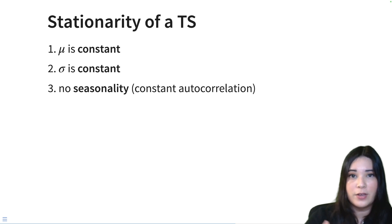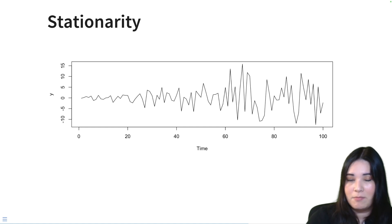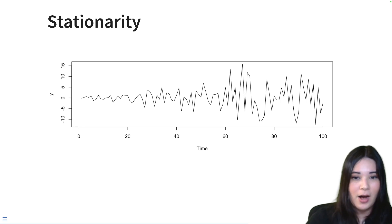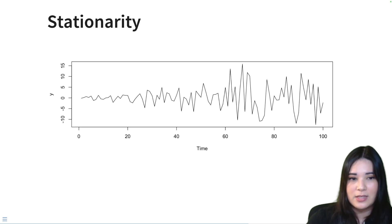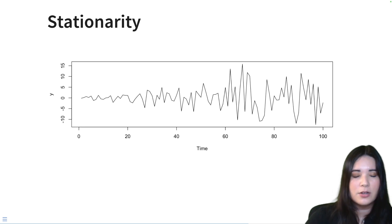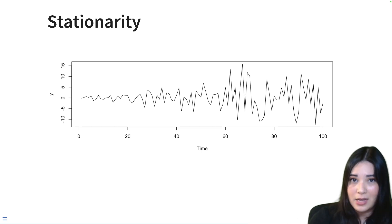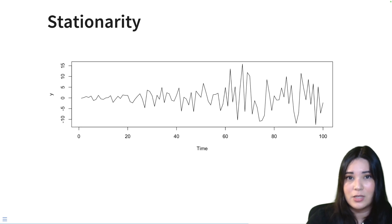It's probably easier to understand stationarity if I show you time series that do not follow stationarity. Here's an example of a time series that is not stationary — pause and see if you can figure out why. One of the things we notice is that it does seem to have a constant mean, oscillating around zero, so we didn't violate that constraint. And I don't really see any clear seasonal patterns. But the variance is clearly violated — on the left, earlier in our time series, the variance is much smaller than it is later in the time series. So this is not stationary because we violated the assumption that our variance is constant.